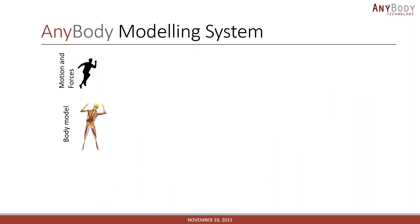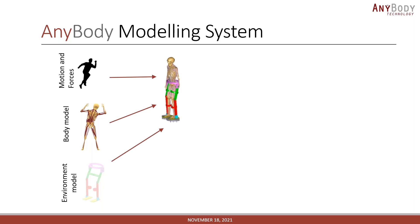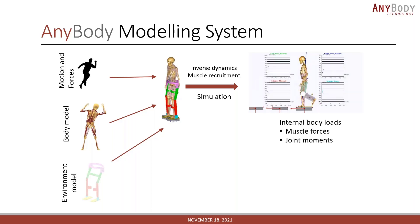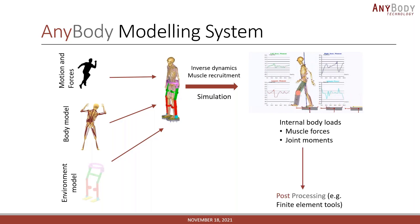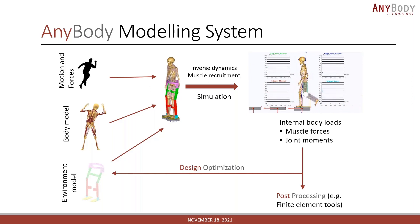The typical workflow in AnyBody could look something like this: you provide recorded motion data as input, then use body models which you or others have built, and provide some kind of environment, which could be special equipment or an exoskeleton. You can then use AnyBody to combine these things, solve the muscle recruitment, and run the inverse dynamic simulations — essentially going from motion to calculating internal body loads and interaction with the environment.